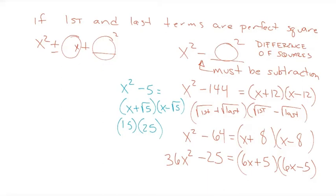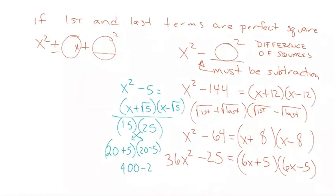The difference of squares pattern even works with plain numbers. For example, 20 plus 5 times 20 minus 5 equals 20 squared minus 5 squared, which is 400 minus 25. In middle school, this is how I started learning to multiply certain two-digit numbers faster than my classmates.